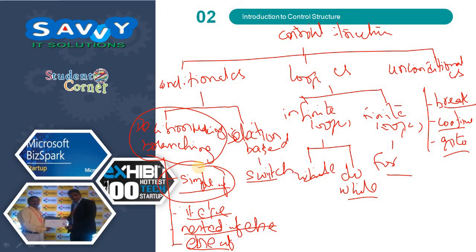Conditional control structures are classified into two types: decision making or branching and selection based. Loop control structures are classified into infinite loops and finite loops. Hope you understand the concept, and in the next series of videos we will help you better understand control structures in detail. Thank you.